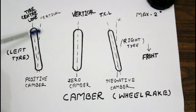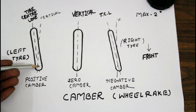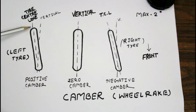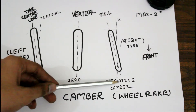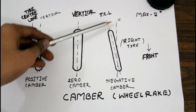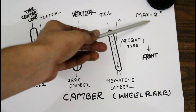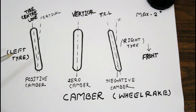If the tilt is outward at the top from the vertical line, it is called positive camber — the tyre centre line leans outward from the top with respect to the vertical line. In negative camber, the top of the wheel is inward with respect to the vertical line. The maximum camber is not more than two degrees. Positive camber is used to deal with outer tyre wear, while negative camber is used to deal with inner tyre wear.